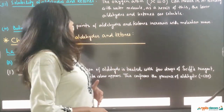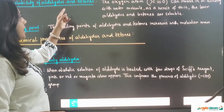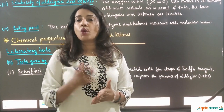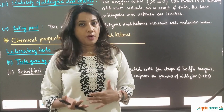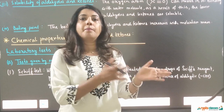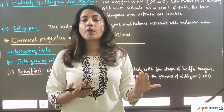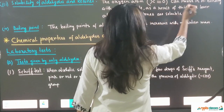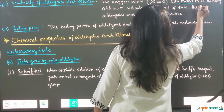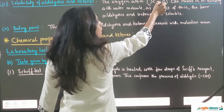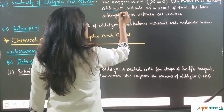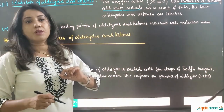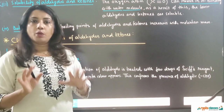The next physical property is solubility of aldehydes and ketones. Whenever an organic compound is soluble in water, the main reason is hydrogen bonding. If there is hydrogen bonding between the organic compound and water, then that compound will be soluble in water. The oxygen atom of the carbonyl group is involved in hydrogen bonding with water molecules. As a result, the lower aldehydes and ketones are soluble in water.